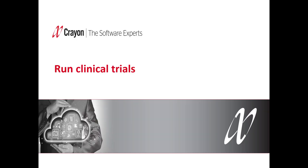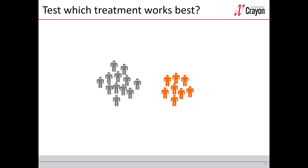Then we have the case of running clinical trials, where you can get help to find out the best medicine. The tests compare two groups of patients — one with medicine A and one with medicine B — to find which treatment works best to get people healthy. Behind this you find tests like the t-test, non-parametric tests, or ANOVA if you have more than two medicines.